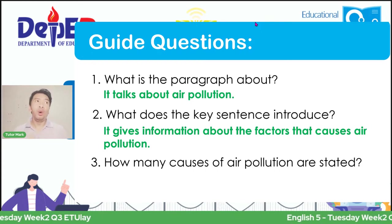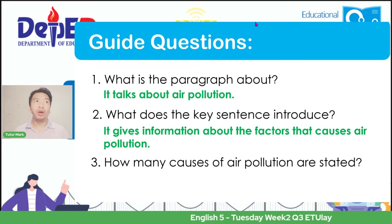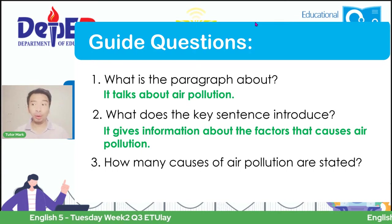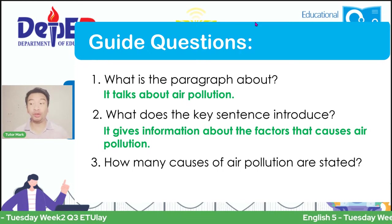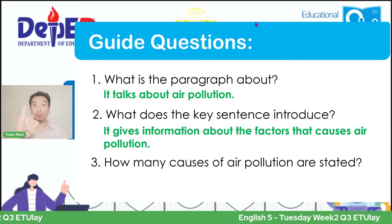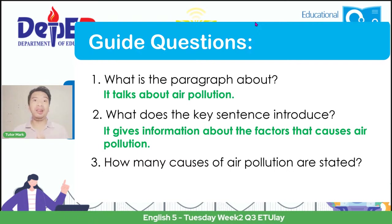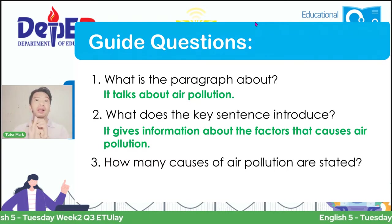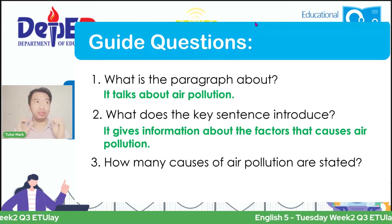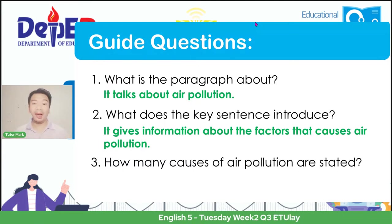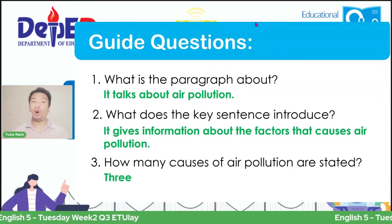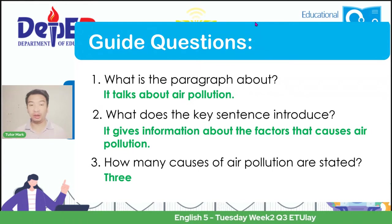So our answer here is: it gives information about the factors that cause air pollution. Answering the third guide question: how many causes of air pollution are stated? Let's look—first, it mentioned natural disasters or the actions of humans due to industrialization; second, the negligence of people; and lastly, the lack of government accountability. Therefore, based on this, there are three causes mentioned.